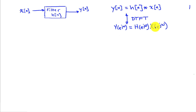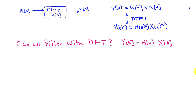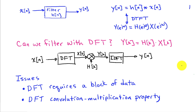Since the DFT samples the discrete time Fourier transform, the question is whether we can represent this filtering operation numerically using the DFT, or whether it's only of conceptual value. In other words, can we do filtering with the DFT by simply multiplying the DFT coefficients of the filter with the DFT coefficients of the input? We might get a block diagram that looks like this.